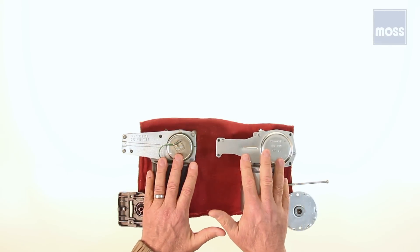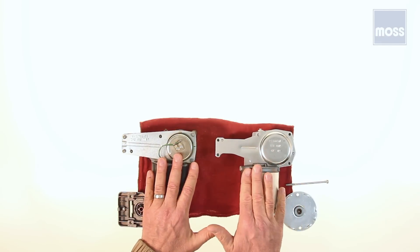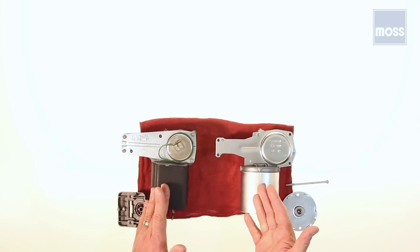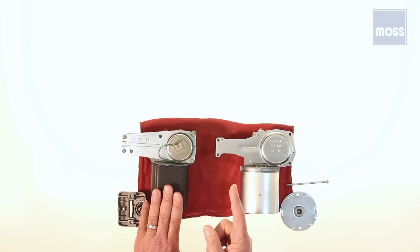Windshield wiper motors are familiar to all of us, but how they work can be somewhat of a mystery. For example, in our classic British cars, the electric motor operates in one direction, but the wipers sweep in two directions.